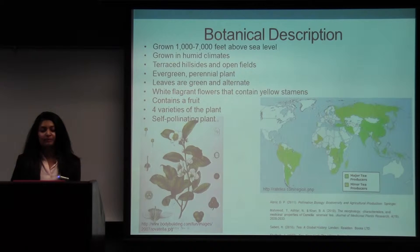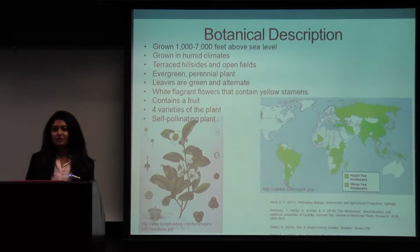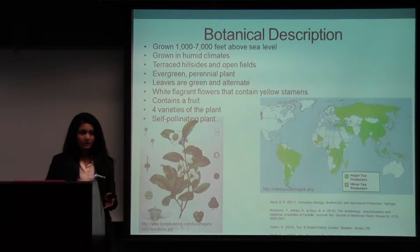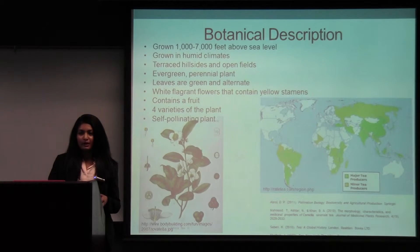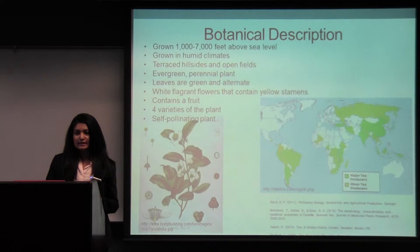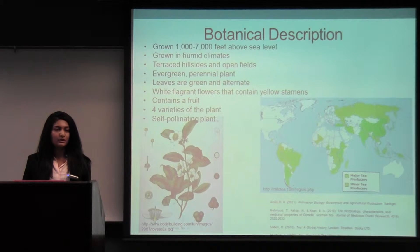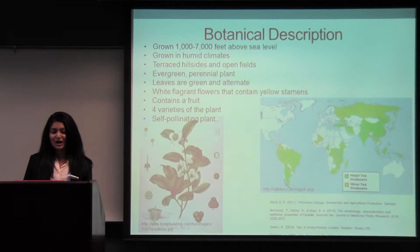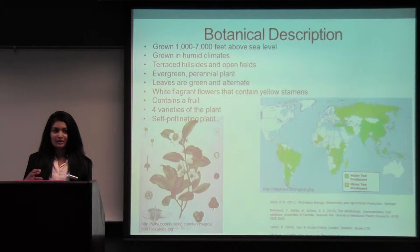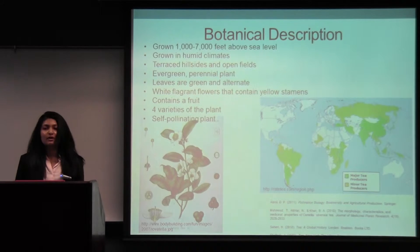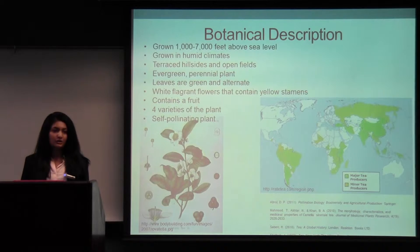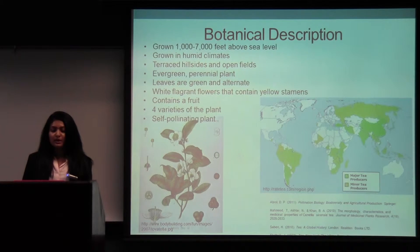Starting with the botanical description: it's grown 1,000 to 7,000 feet above sea level in about 50 to 85 degrees Fahrenheit, with annual rainfall of about 80 to 90 inches per year — a pretty humid climate. It's grown on terraced hillsides and open fields, and can be grown as a tree or shrub. It grows with green short-stalked leaves and white fragrant flowers, which occur in clusters of 2 to 4 with yellow stamens.